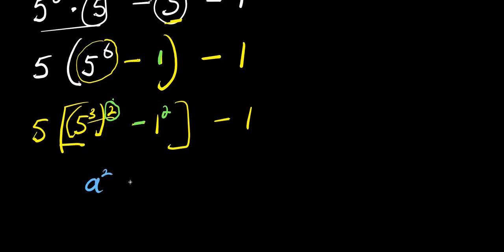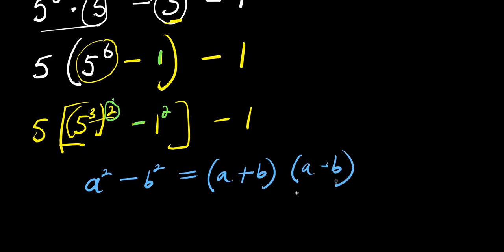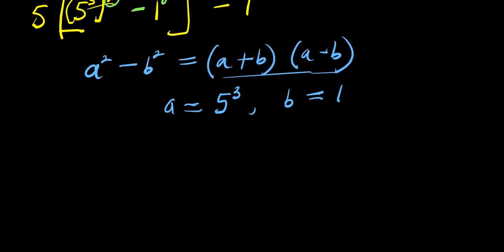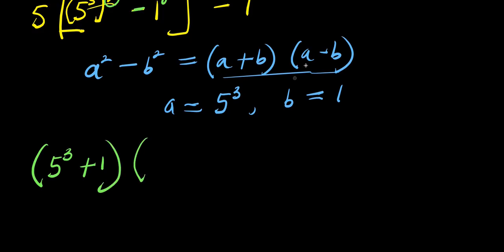The difference of two squares identity is a squared minus b squared equals a plus b times a minus b. In this case, a equals 5 to the power of 3 and b equals 1. So we have, for a plus b, we get 5 to the power of 3 plus 1, times, for a minus b, we get 5 to the power of 3 minus 1.